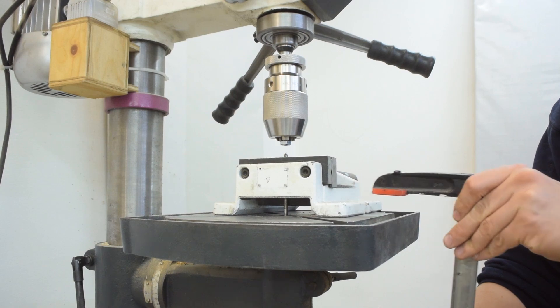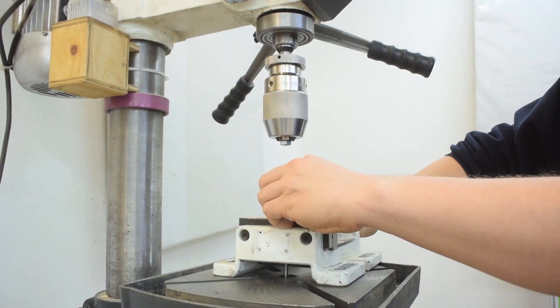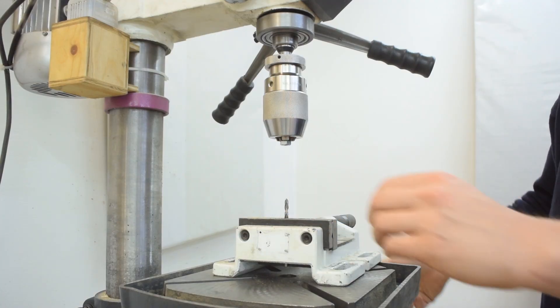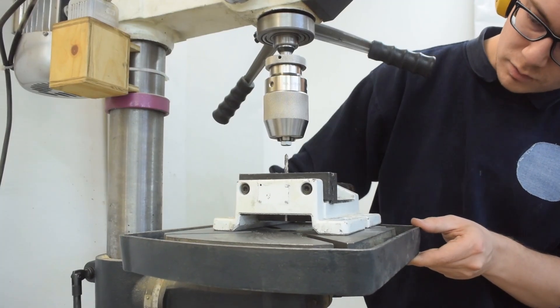Now that the initial center hole has been established we can expose the entire length of the drill and drill all the way through. The center hole will pull that bit and the vise right into the center of the workpiece.